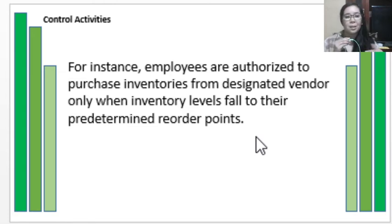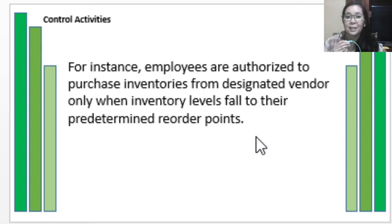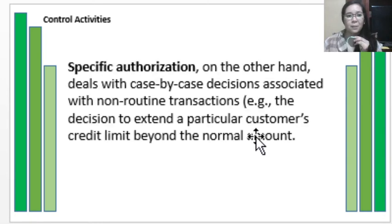For example, employees may be authorized to purchase inventories from a designated vendor only when inventory levels fall to their predetermined reorder points. There is a policy or guideline governing the purchase of inventories: once inventory levels fall below the reorder point, repurchase should take place, and only from the designated vendor. That is general authorization.